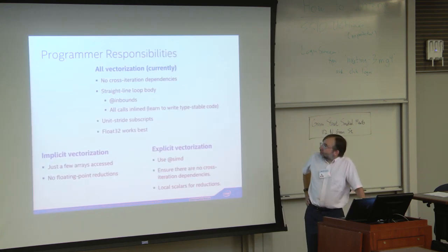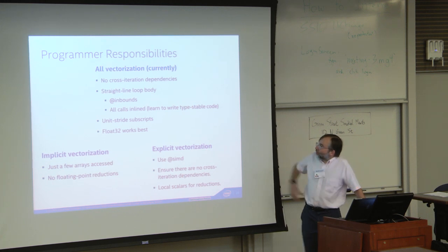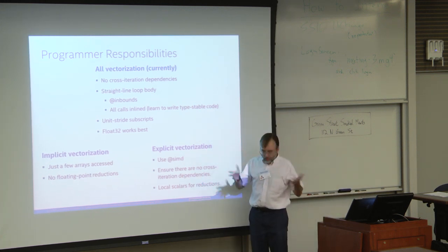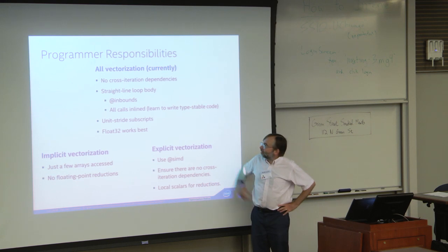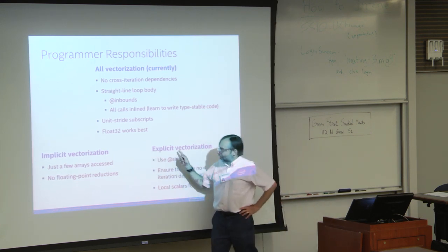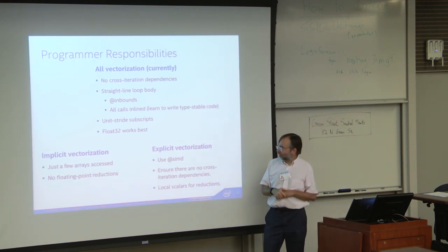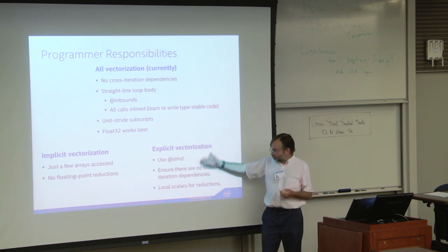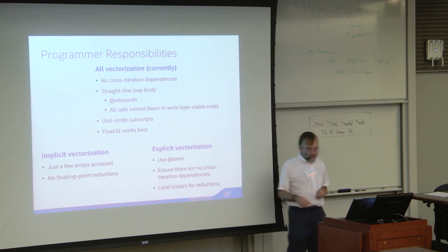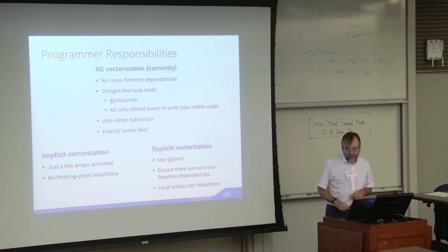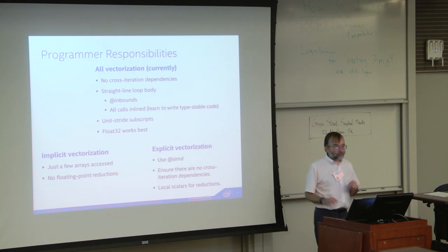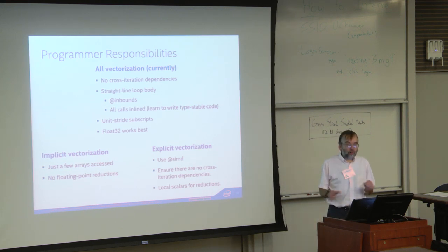For the programmer responsibilities summary: implicit and explicit vectorization really just differ in that explicit saves the runtime check, so you're taking responsibility to say there are no cross-iteration dependencies. You also have to be sure to only use local scalars for reduction variables so the compiler can recognize them, because that special form of cross-iteration dependency can be dealt with.